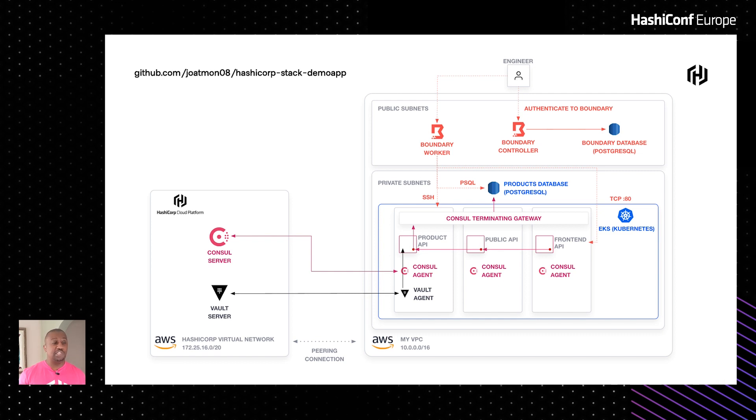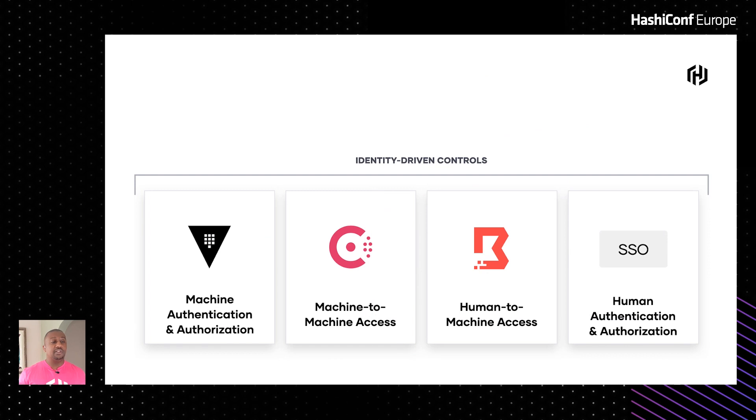The final piece is single sign-on: to unify our identity providers and provide a smooth authentication workflow. Vault, Boundary, and Consul all support OIDC as an auth method, which allows us to bring many different workflows that work for our organizations. Because OIDC uses JWT under the hood, it's a similar case for applications as well, providing a unified approach.